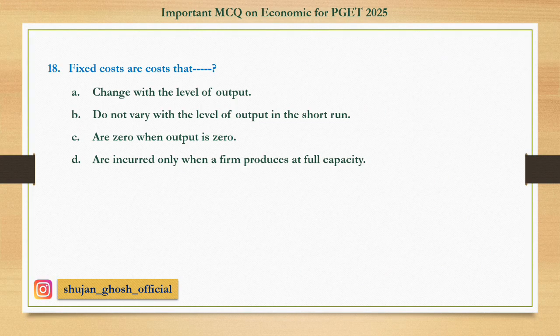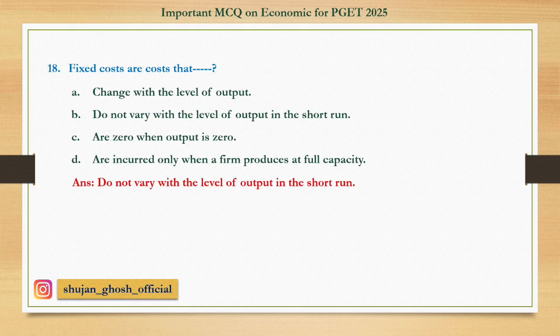Question number eighteen: Fixed costs are costs that — option A: change with the level of output; B: do not vary with the level of output in the short run; C: are zero when output is zero; D: are incurred only when a firm produces at full capacity. Answer: do not vary with the level of output in the short run.